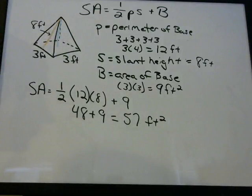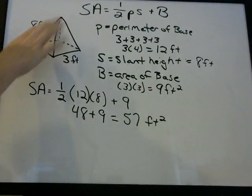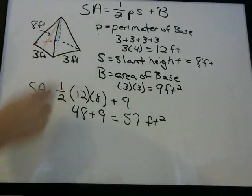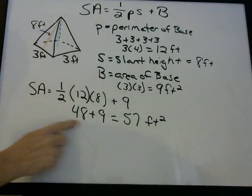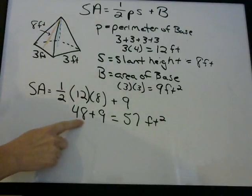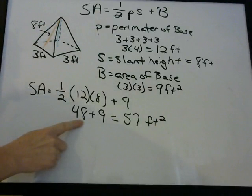So this 48 — that's the surface area for those four triangular sides, for all four of them.